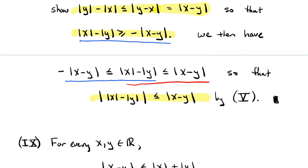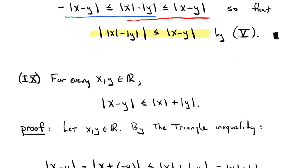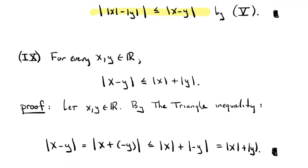Property nine: for any two real numbers x and y, the absolute value of the difference is no more than the sum of the absolute values: |x - y| ≤ |x| + |y|. This and properties seven and eight are all different versions of the triangle inequality. Just rewrite x - y as x + (-y), apply the triangle inequality to get |x| + |-y|, and note that |-y| = |y|.